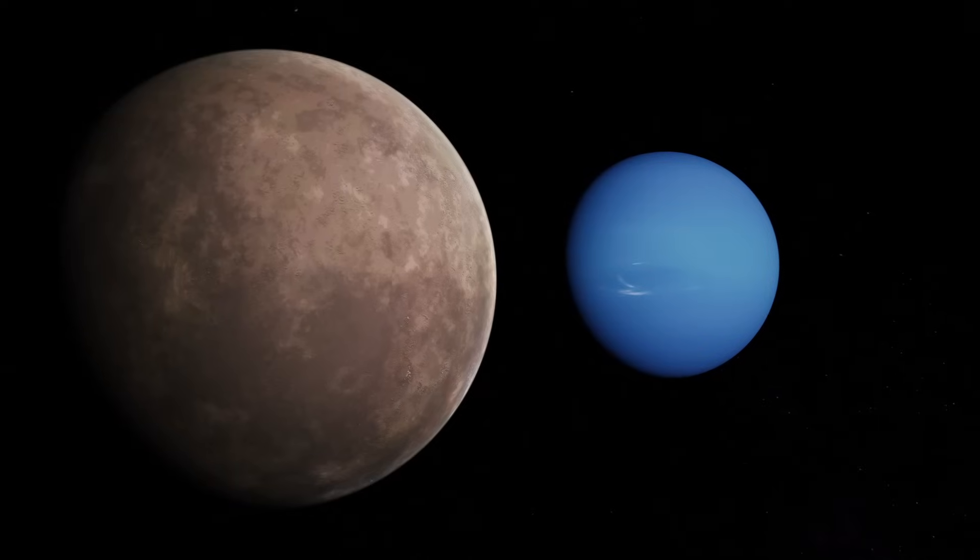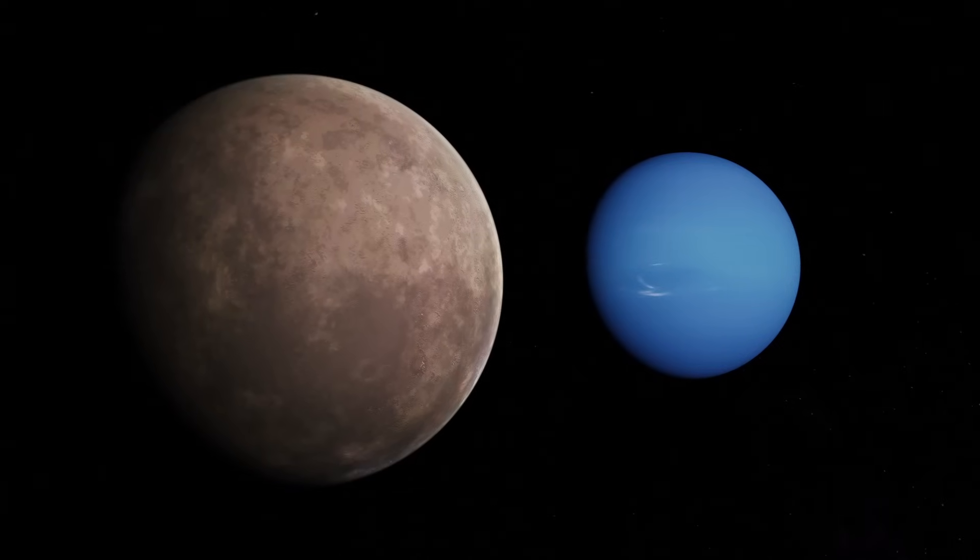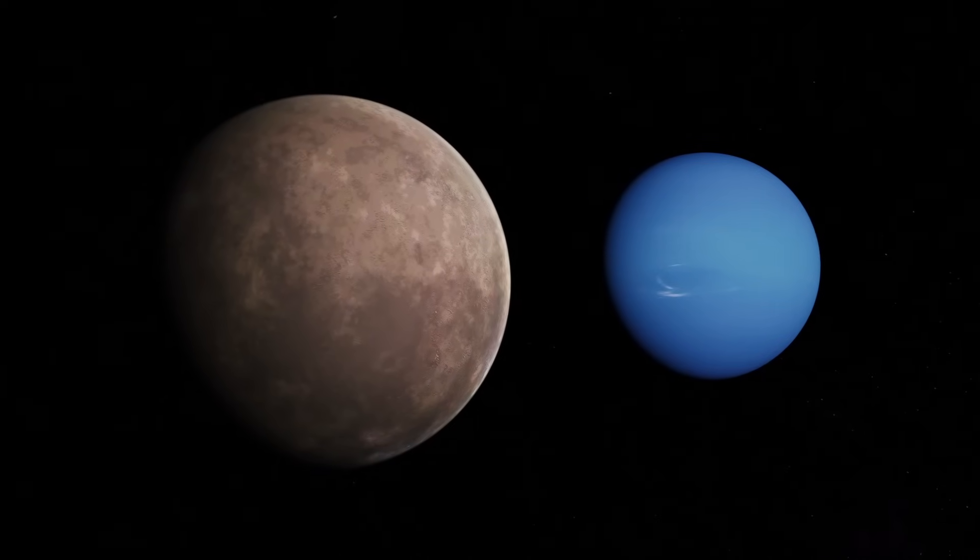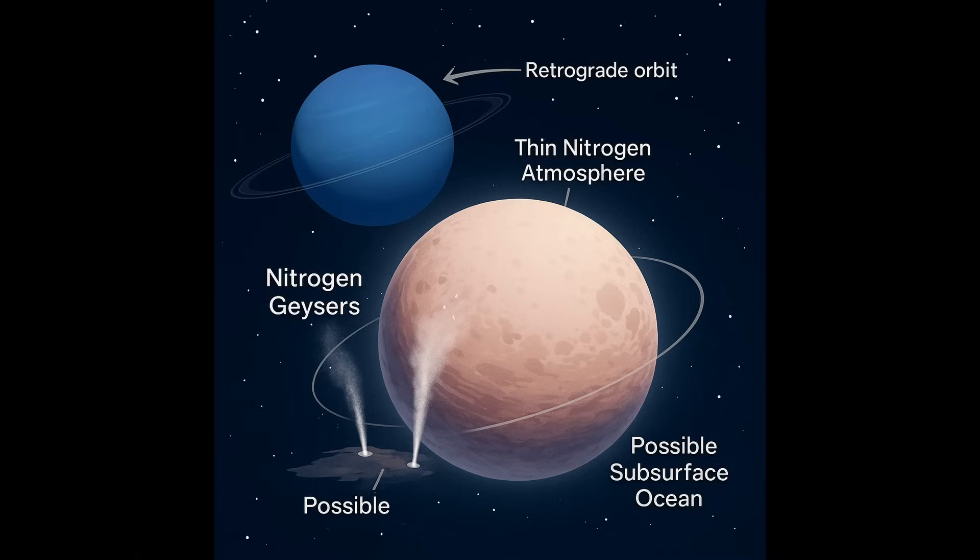When Voyager 2 flew past, it saw something astonishing: active volcanoes, not of molten rock but of ice and gas. These are cryovolcanoes.